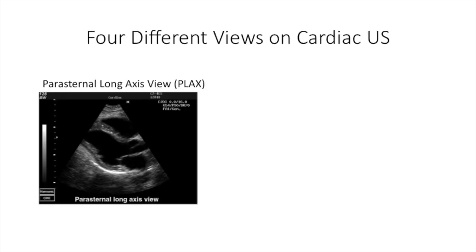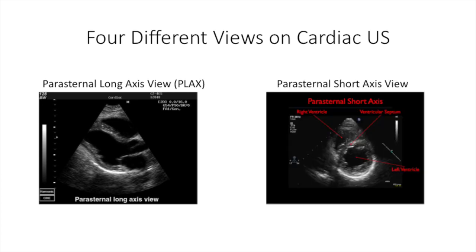The parasternal long-axis view is primarily used to assess systolic function and does not use tissue Doppler imaging. However, this view is useful for obtaining the apical four-chamber view, which does use TDI. The parasternal short-axis view is gained from rotating the probe 90 degrees while in the parasternal long-axis view and is also primarily used to assess systolic function of the heart. It has no use for tissue Doppler imaging.